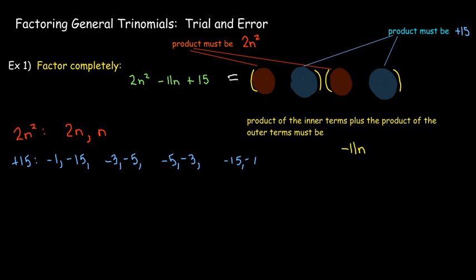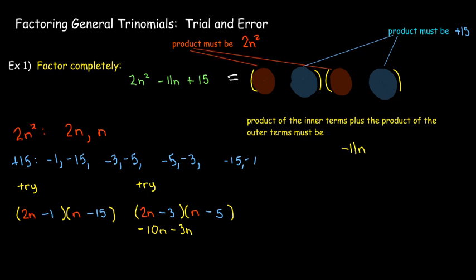You can say right away that you shouldn't be using any numbers larger than negative 11 if they're both going to be negative numbers. So trying negative 1 and negative 15 is not even sensible — it's going to automatically be larger than negative 11 when you add them together. So let's try the next pair, negative 3 and negative 5. Multiplying the outer ones, I get negative 10, and multiplying the inner, I get negative 3. I want negative 11, but that gives me negative 13, so we have to reject that one.